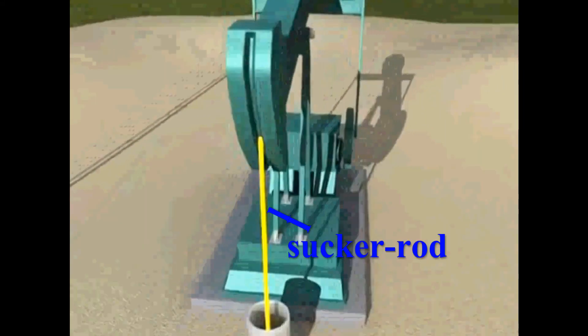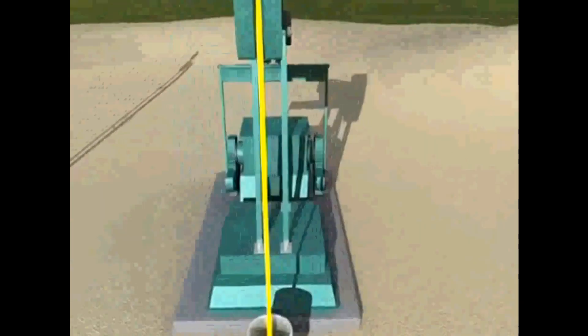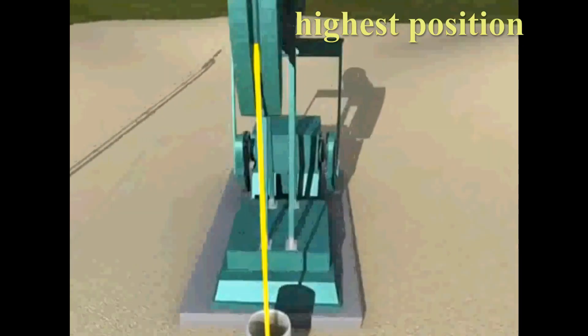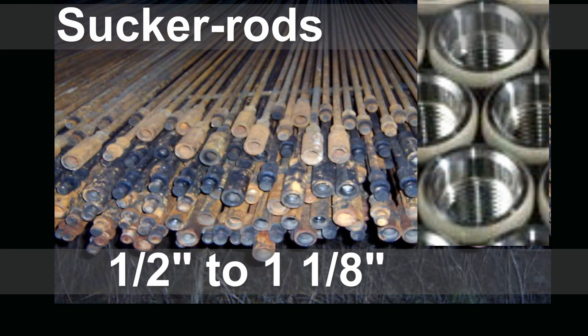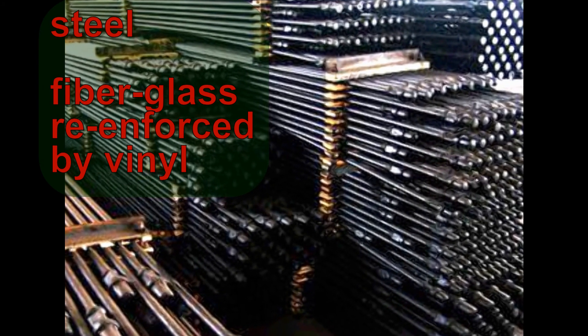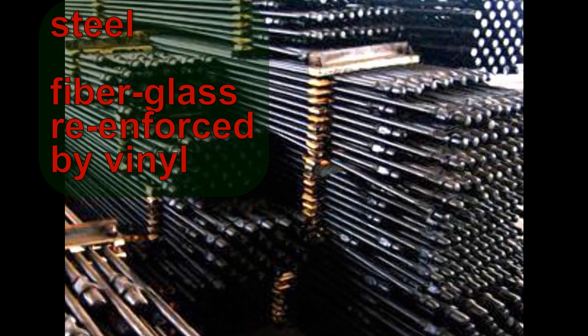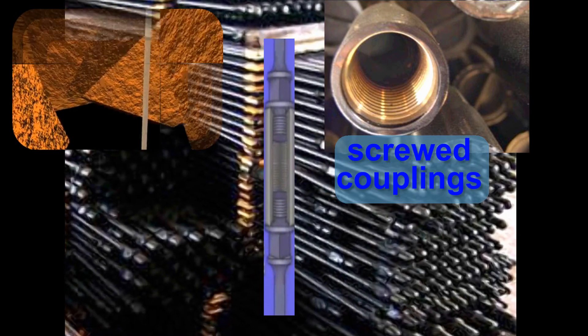As you can see, the sucker rods are attached to the horsehead. These rods must be in strings long enough to reach from the highest upward position of the horsehead down to the bottom of the hole where the pump is attached. These sucker rods come in lengths of 25 to 30 feet and in diameters from 1½ inch to 1⅛ inch. Made of steel or fiberglass reinforced by vinyl for corrosive applications, each has screwed couplings so that the string can be made long enough to reach the bottom of the well.